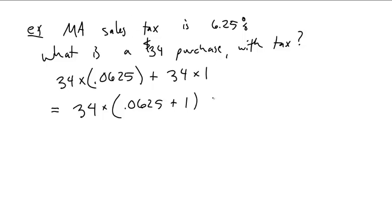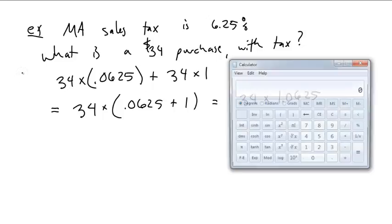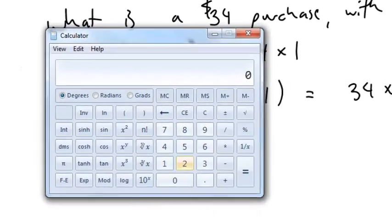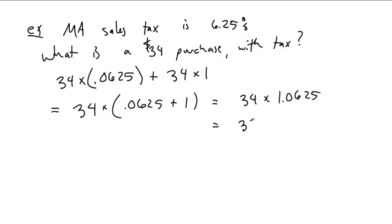So, again, we can, and 1 plus 0.0625 is pretty easy. This is 34 times 1.0625, which is kind of cute. Which, you know, we can do that on a calculator and we can do this in one go. 34 times 1.0625 is 36.125. Oh, yes, they round up. They always round up. 36.13. It's $36.13 with tax.